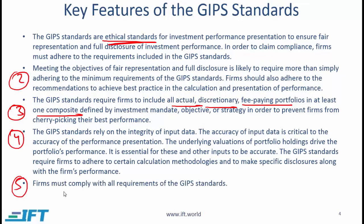Number five, firms must comply with all requirements of the GIPS standards. Either a firm complies with all GIPS requirements and can then make a claim that it is GIPS compliant, or if a firm does not comply with all standards — even if it doesn't comply with just one sub-standard — it cannot claim GIPS compliance.